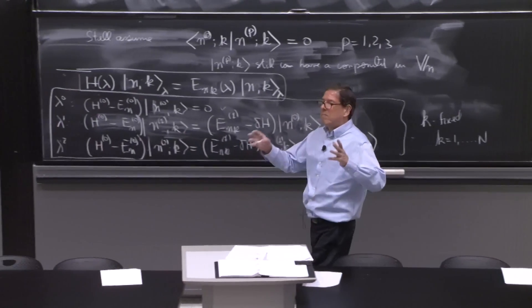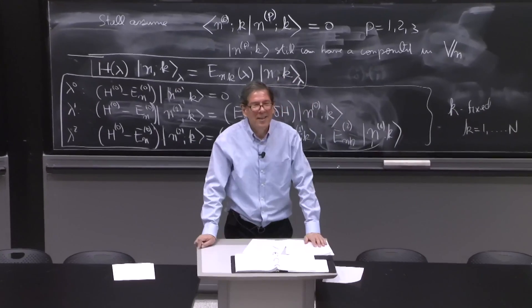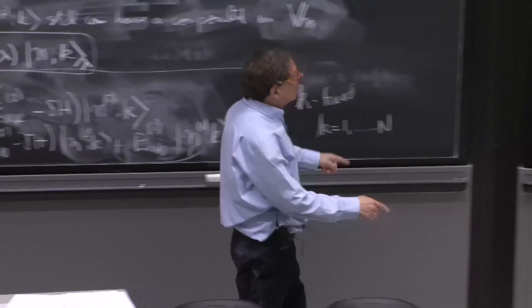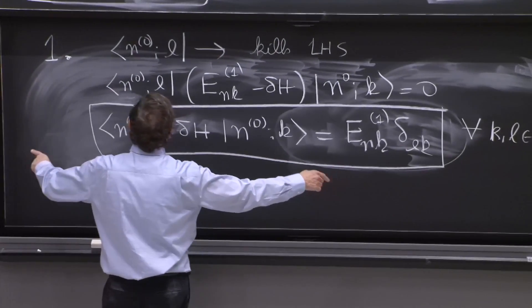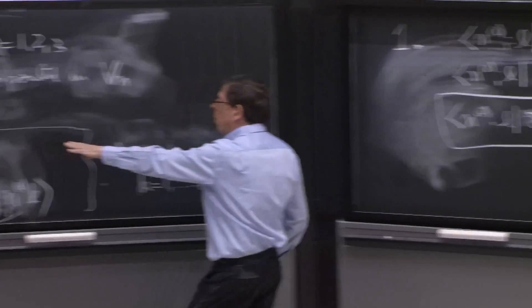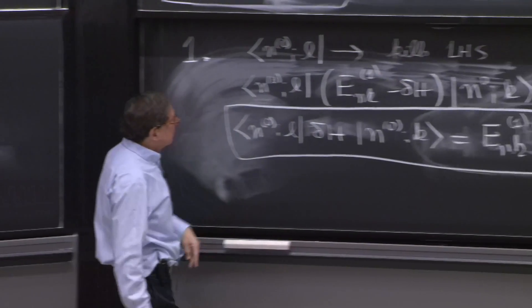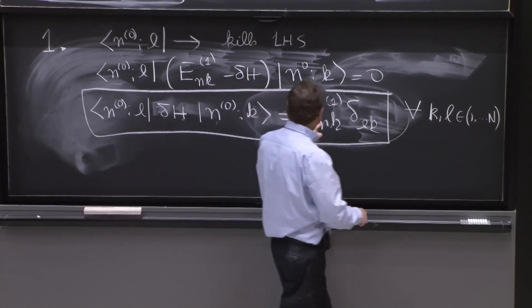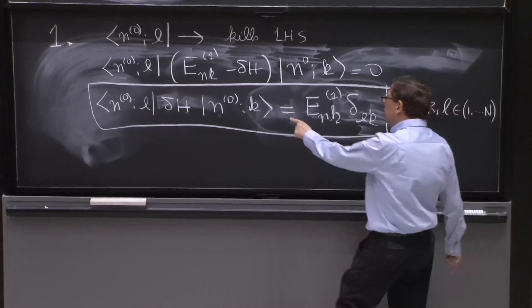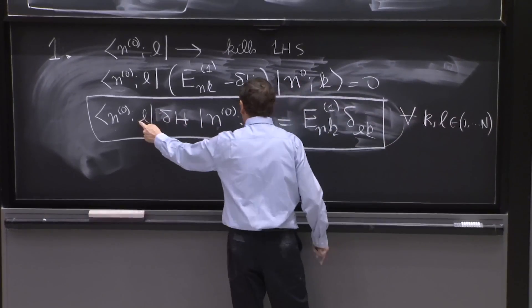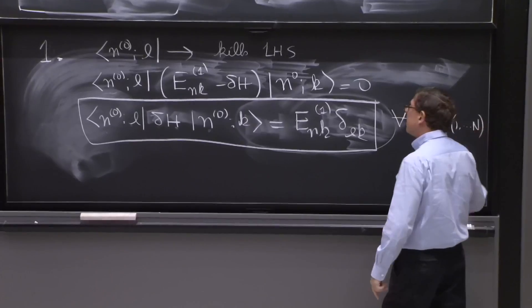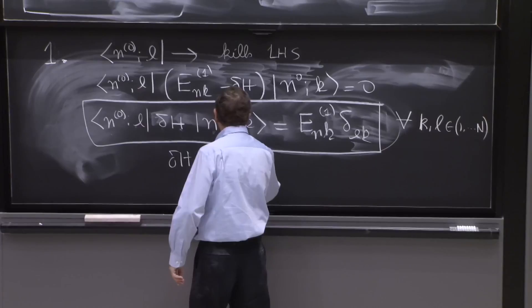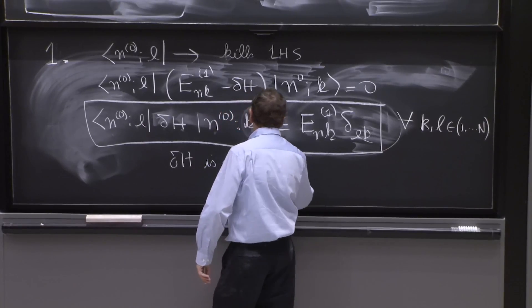And we could have hit with all l. And now, this is an amazingly nice equation. It tells you a nice story. What is the story? The story is that look at this. This equation says that if you want this to hold, it better be that delta H is diagonal on the basis that you're using.